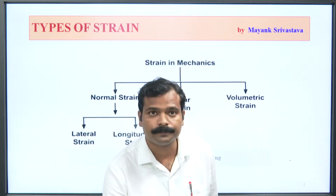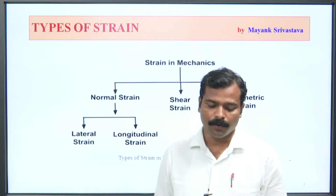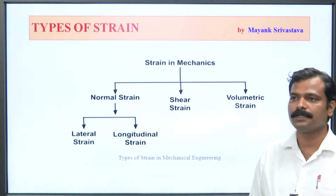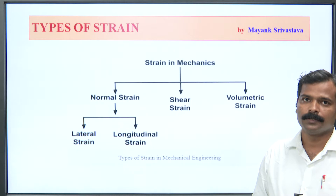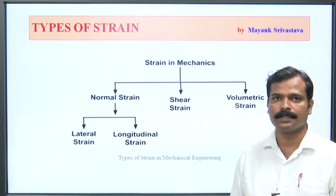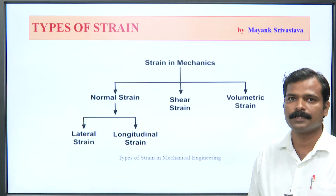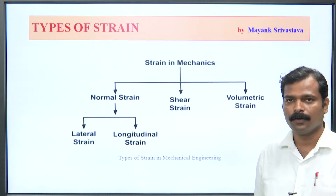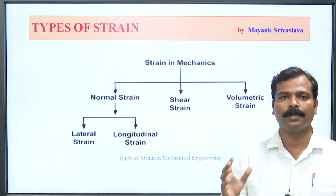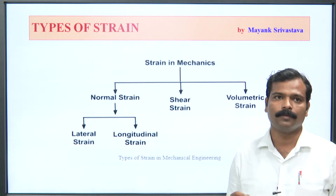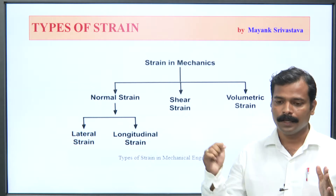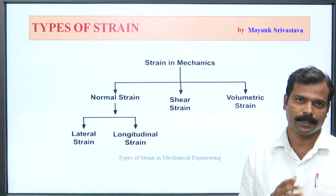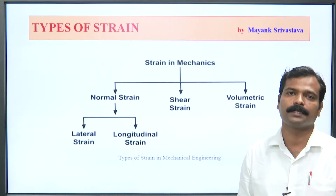Next is strain mechanics. Strain is characterized on three bases. There are basically three types: the first one is normal strain, the second is shear strain, and the third is volumetric strain. What is normal strain? If the force is exerted perpendicular to the cross-sectional area, whatever stress or deformation develops is called normal strain.